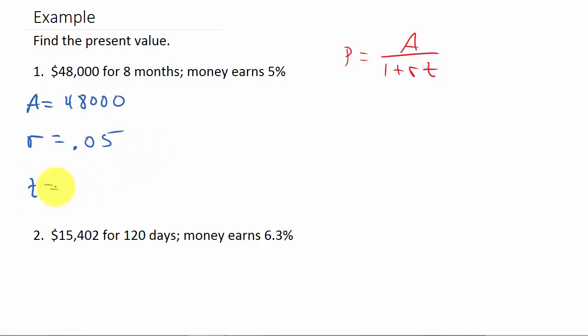And then T, that's the time. So that's going to be 8 over 12. Remember, the time, the 8 months. Remember, in the formula, it says T years. So T has to be in years. That's why we do the 8 over 12.